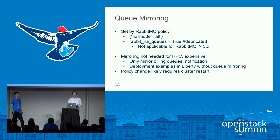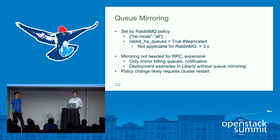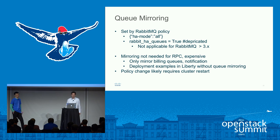On to queue mirroring. This is set by default by the RabbitMQ policy. You will see in some legacy configurations on the client side a setting for Rabbit HA queues, but this actually doesn't do anything after Rabbit 3.0. All the queue mirroring policies are only set on RabbitMQ policies, not in the client configuration, so just keep in mind that client-side configuration doesn't do anything.